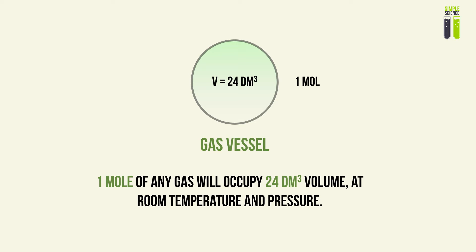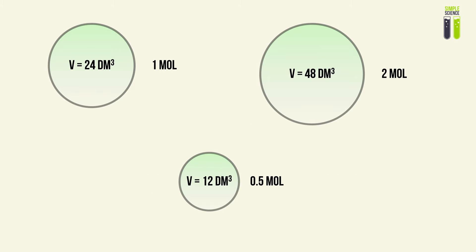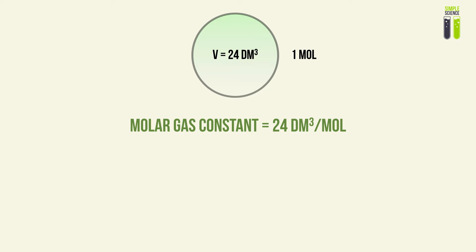There is essentially a linear ratio between the number of moles and the volume of gas which the atoms occupy, which is one mole to every 24 dm³. So if we were to have two moles, we would have twice as much volume, whereas half a mole would give half as much volume. Therefore we can relate volume and number of moles by a molar gas constant of 24 dm³ per mole.